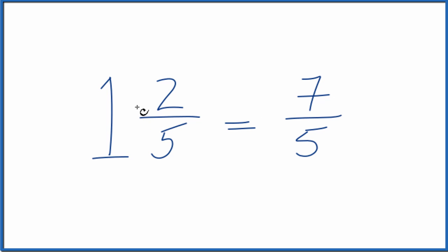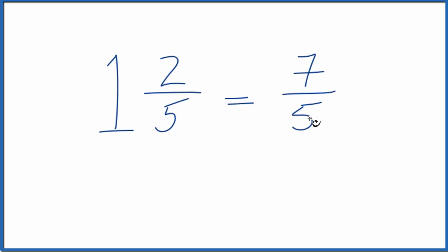So one more time: 1 times 5 is 5, plus 2, that gives us 7. Bring the denominator across. And the mixed number 1 and 2 fifths equals the improper fraction 7 fifths.